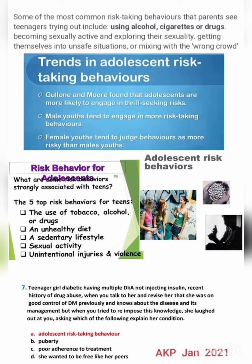The five top risk behaviors for teenagers include the use of tobacco, alcohol, or drugs; an unhealthy diet; sedentary lifestyle; sexual activity; and unintentional injuries and violence. Look at the image — you are seeing the adolescent risk behavior images.